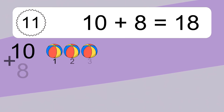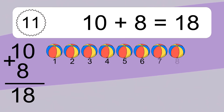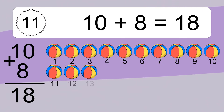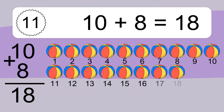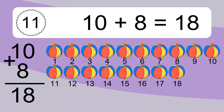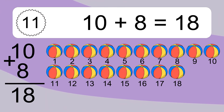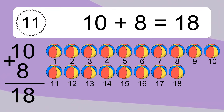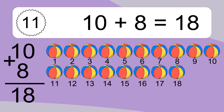Ten plus eight equals what? Ten plus eight equals eighteen. Let's count it: one, two, three, four, five, six, seven, eight, nine, ten, eleven, twelve, thirteen, fourteen, fifteen, sixteen, seventeen, eighteen.